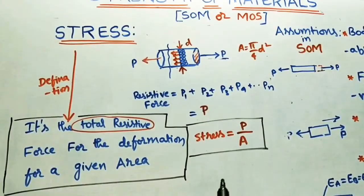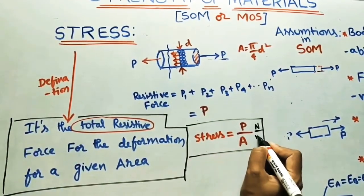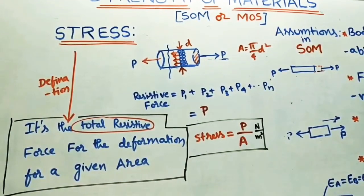So what are the units for stress? As we know for force, it is Newton. And for area, it is meter square. Newton by meter square.